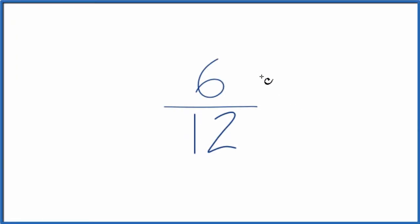If you need to find three equivalent fractions for six-twelfths, here's how you can do that. What we want to do is find some other fractions that are equal to, they're equivalent to six divided by twelve. They have the same value, the same decimal value, it's just that the numerator and denominator are different.